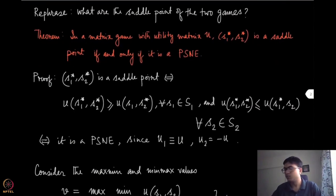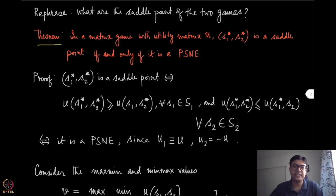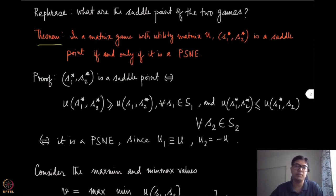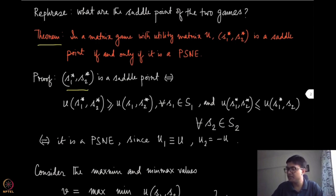Stating this more formally: we have the theorem that in a matrix game with utility matrix U, a strategy profile S1*, S2* is a saddle point if and only if it is a pure strategy Nash equilibrium. This establishes the indistinguishability between the saddle point and PSNE, so in the context of matrix games, whenever we talk about saddle points, we are actually meaning pure strategy Nash equilibrium and vice versa.